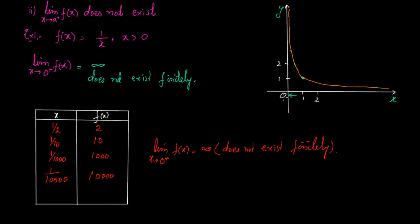We see that at the point zero the limit of the function does not exist, and it is clear from the graph that at zero the graph has an abrupt rise. So whenever a graph has an abrupt rise at a point, the limit at that point does not exist. But this is not the only case — even if there is an abrupt fall rather than an abrupt rise, the limit still does not exist finitely. To understand that, let me consider another example.